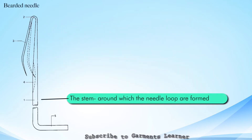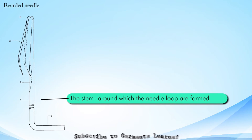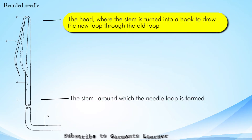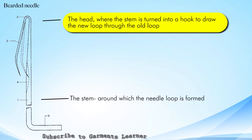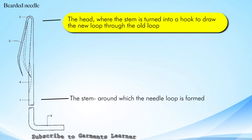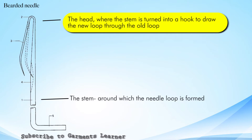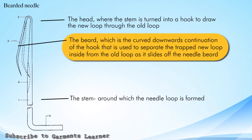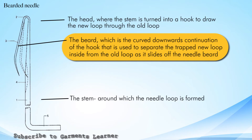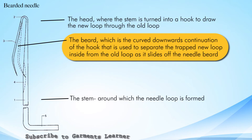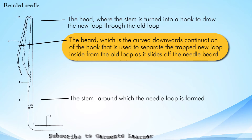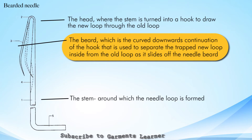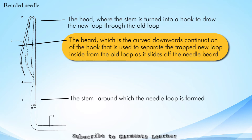The stem around which the needle loop is formed; the head, where the stem is turned into a hook to draw a new loop through the old loop; the beard, which is the curved downward continuation of the hook, used to separate the trapped new loop inside from the old loop as it slides off the needle.